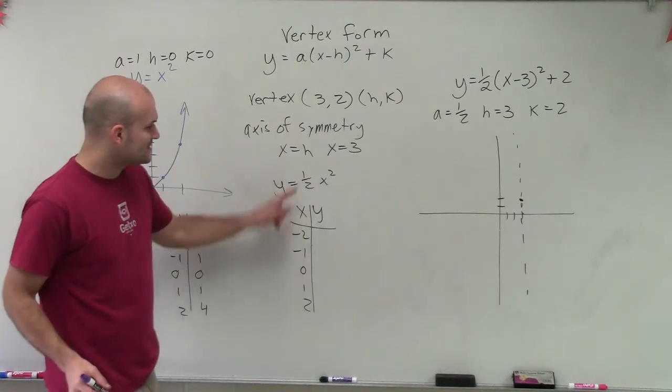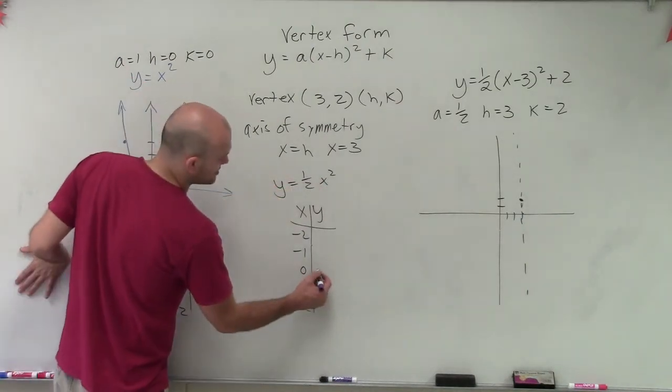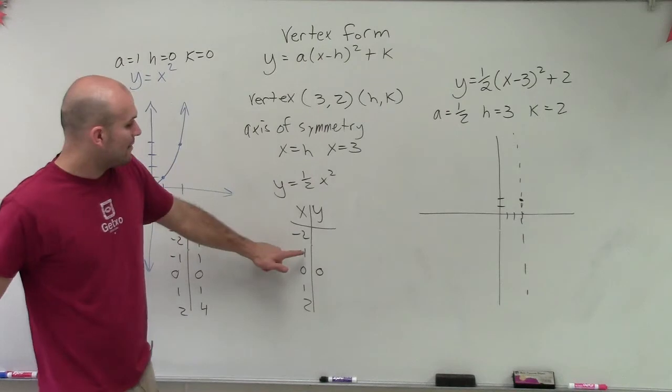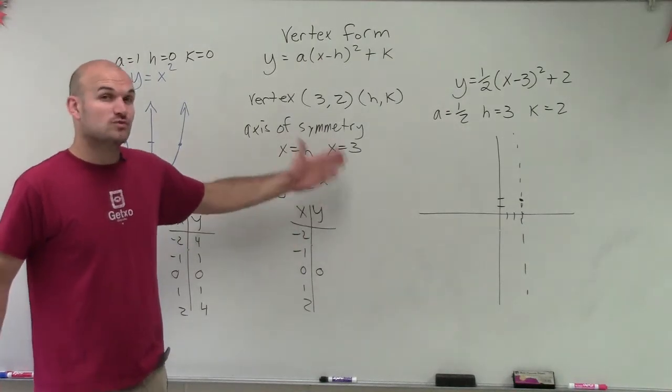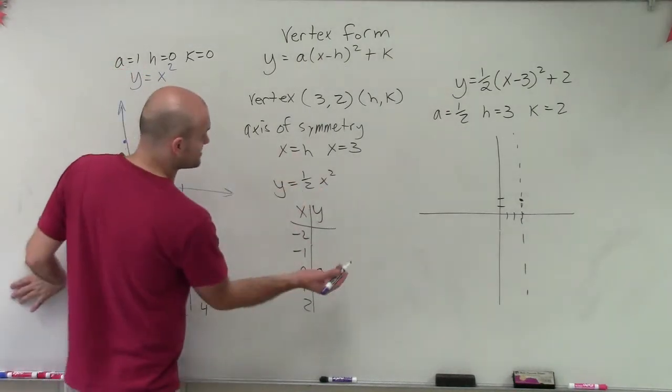So now when I plug in 0, it's 0 squared. But now it's being multiplied by 1/2, which is still going to be 0. But now when I plug in negative 1, negative 1 squared is 1. And 1 times 1/2 is 1/2.